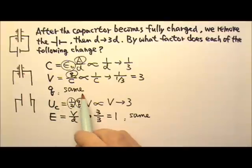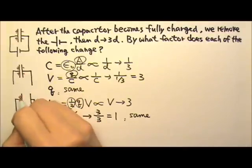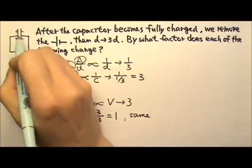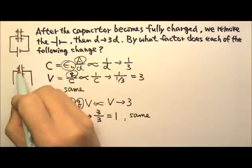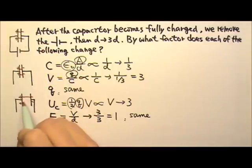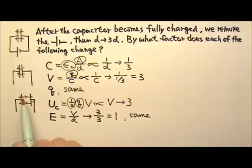Since the charges on the plates stay the same, positive, negative, same amount of charge, that means the number of field lines in between the plates is the same. When we pull the plates farther apart, the lines get longer, but the line density would stay the same. So the electric field stays the same.